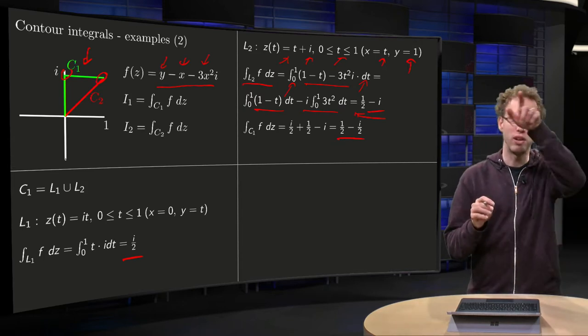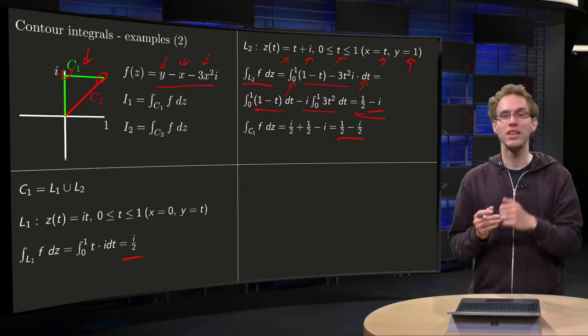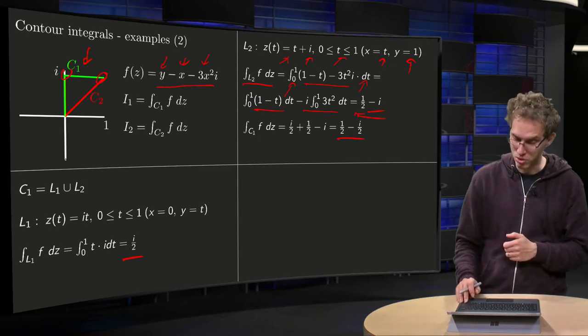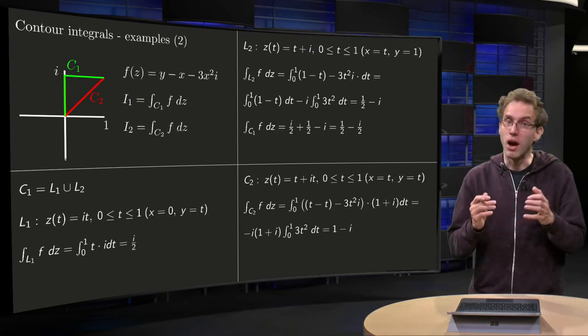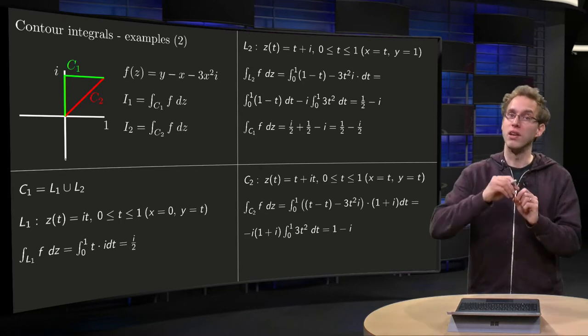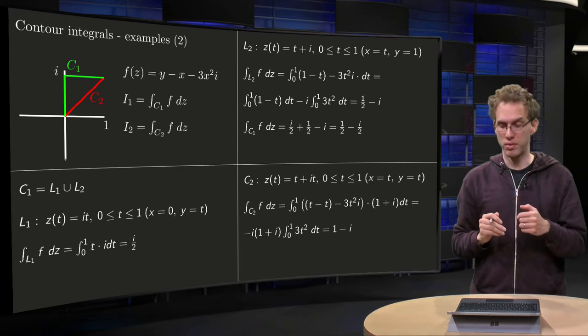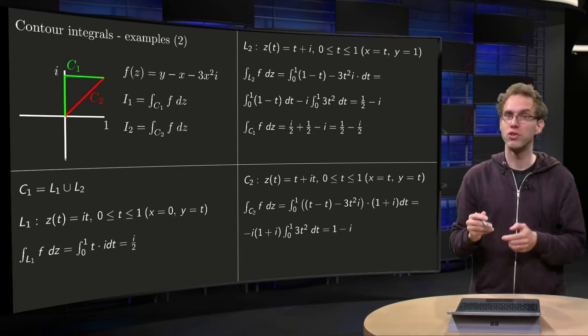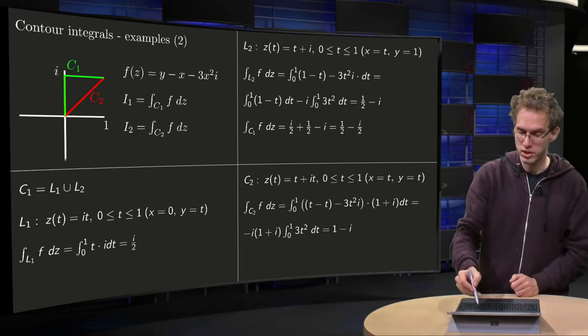Okay, those line segments are easy to parametrize. Let's take a look at the integral along C2, which looks a bit harder. Well, what we can do over there, we have the line y equals x, so we can take x equals t and y equals t and let t run between 0 and 1.